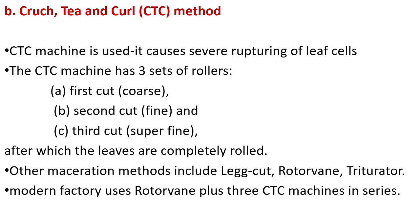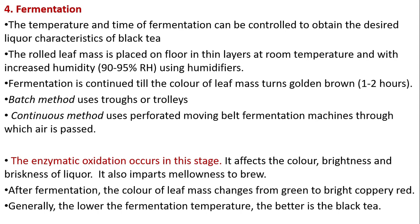The CTC (Crush, Tear, Curl) method uses a CTC machine, which causes severe rupturing of leaf cells. The CTC machine has three sets of rollers: first cut (coarse), second cut (fine), and third cut (super fine), after which the leaves are completely rolled. Other maceration methods include the Rotorvane. Modern factories use a Rotorvane plus three CTC machines in series.